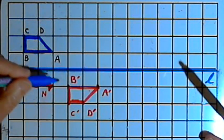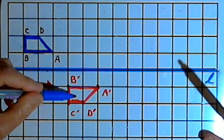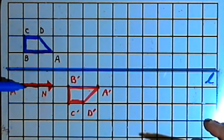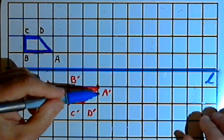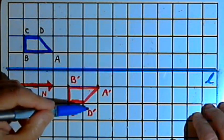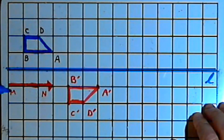Now if I want to, I can repeat this process. I can do another glide reflection with the same instructions. So what that's going to mean is I take this A prime, B prime, C prime, D prime, and follow the instructions one more time.